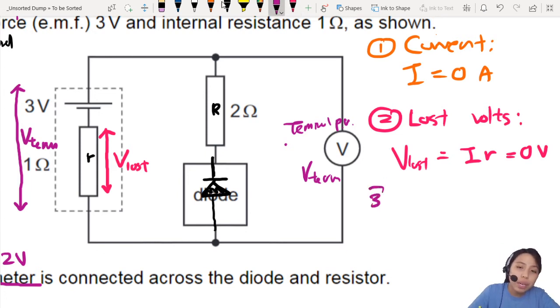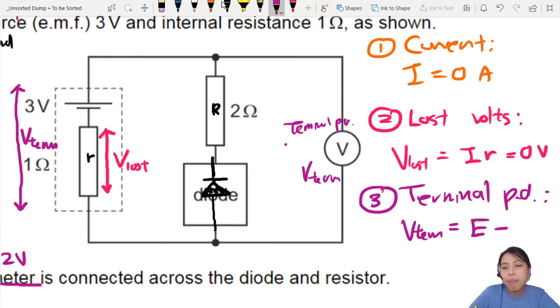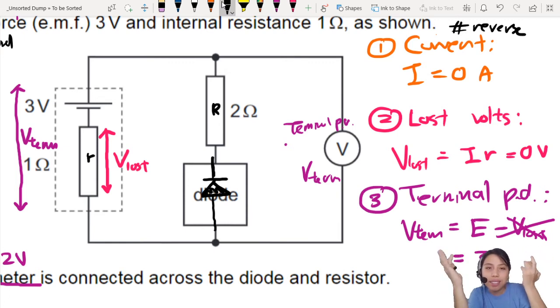There are no lost volts. And if there are no lost volts, what is the terminal potential difference? Across the battery. Battery terminals. That's why we call it terminal. So your terminal potential difference will just be EMF minus the lost volts, right? But if there's no lost volts, then this part is gone. So all you have is EMF, which is 3 volts.